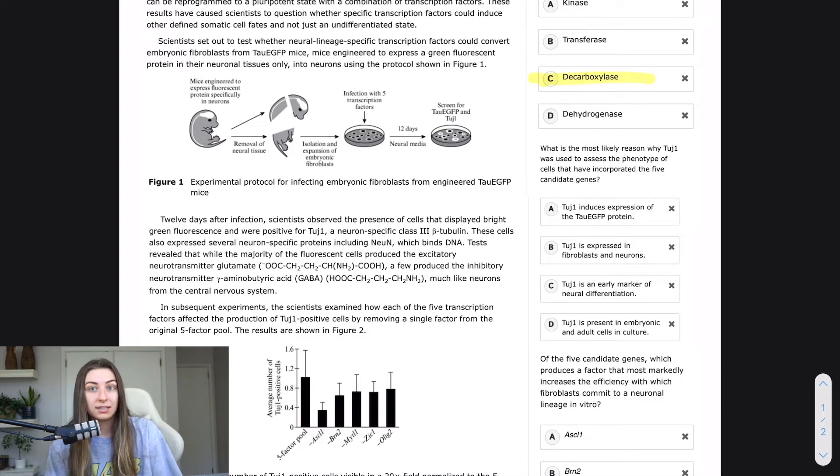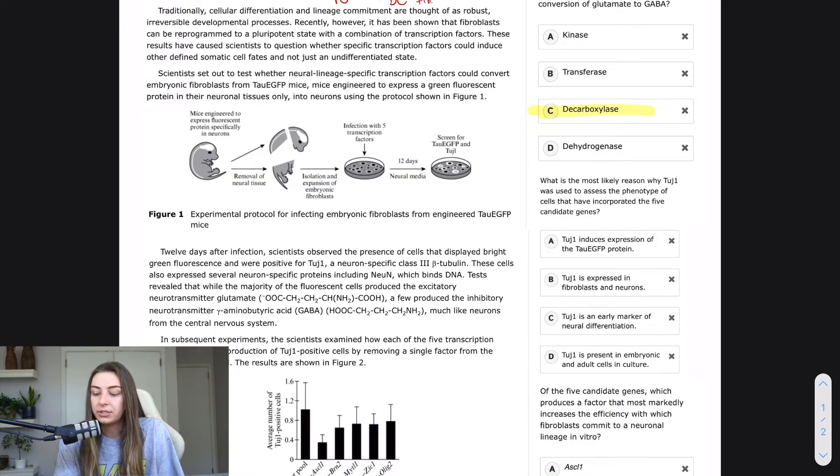So let's find an answer choice that says that. A: TOOGE1 induces expression of the tau EGFP protein. So, that's not true. The tau EGFP was the green fluorescent protein. And the TOOGE1 does not induce the expression of that. B: TOOGE1 is expressed in fibroblasts and neurons. So this is an attractive answer choice because we want it to say TOOGE1 is expressed in neurons. That's why it's used.